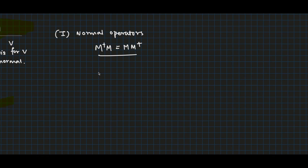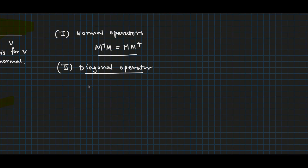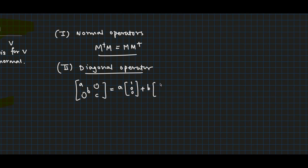A matrix with non-diagonal elements equal to zero is called a diagonal matrix, and any operator represented by a diagonal matrix is called a diagonal operator. The eigenvalues of a diagonal operator are the diagonal elements, and the eigenvectors are the standard basis vectors. For example, a diagonal matrix with entries a, b, c can be written as a times [1,0,0] plus b times [0,1,0] plus c times [0,0,1].